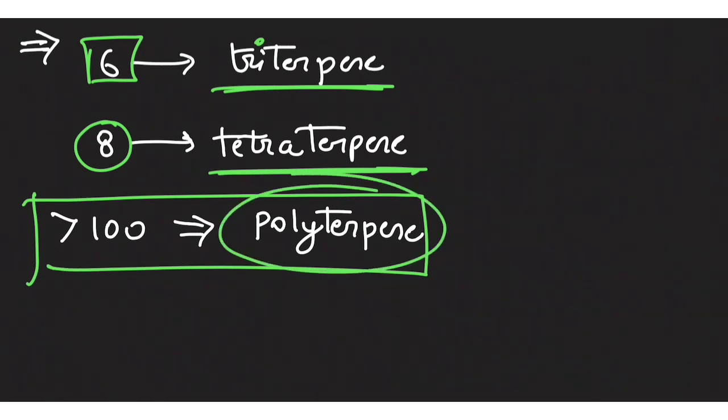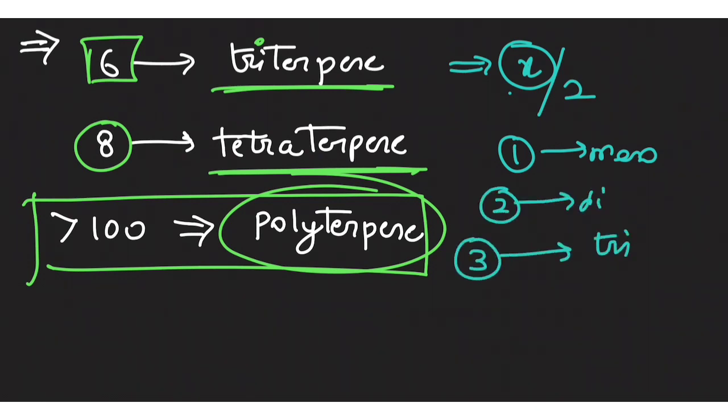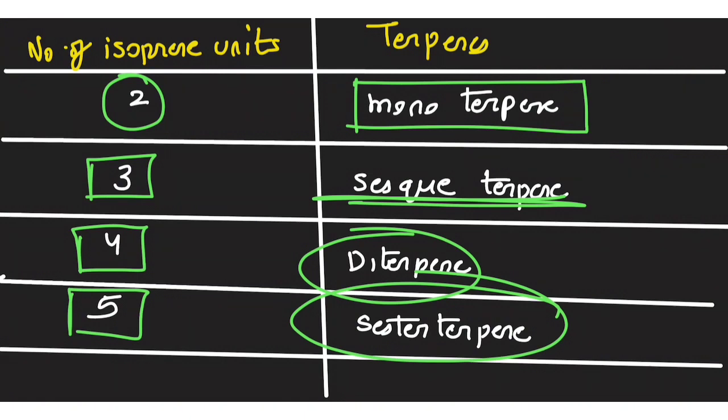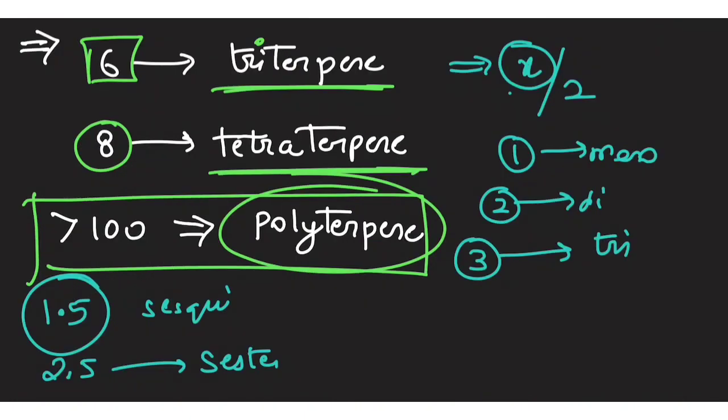Now how you have to remember it: basically calculate the number of isoprene units and that will be x divided by 2. If you get 1 then monoterpene, if you get 2 then diterpene, if you get 3 then triterpene, and basically if you get 1.5 it will be sesquiterpene and if you get 2.5 it will be sesterterpene.